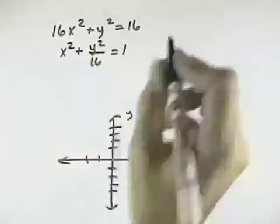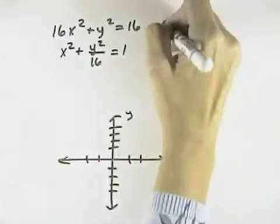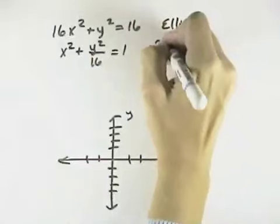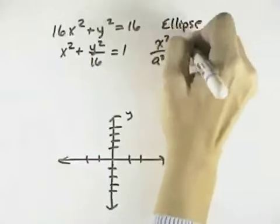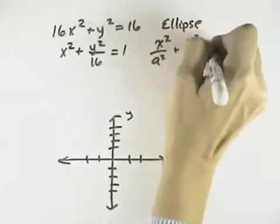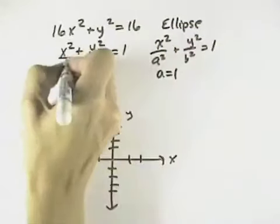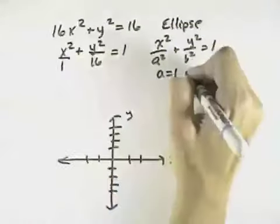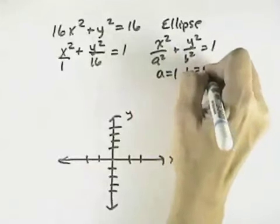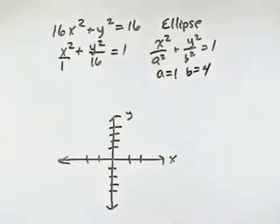And now we can see that it fits the form of an ellipse. So this will be the graph of an ellipse, which is x squared over a squared plus y squared over b squared equals 1. And in our case, a is equal to 1, because we could put this over 1, and the square root of 1 is 1. And b is equal to 4, because 4 squared will give us 16.